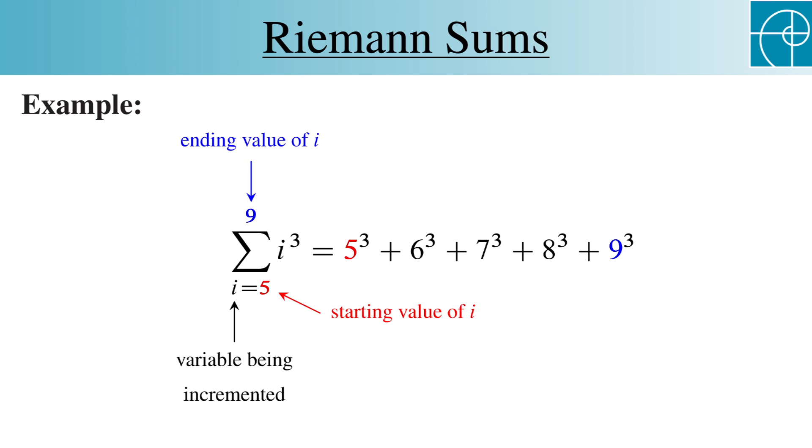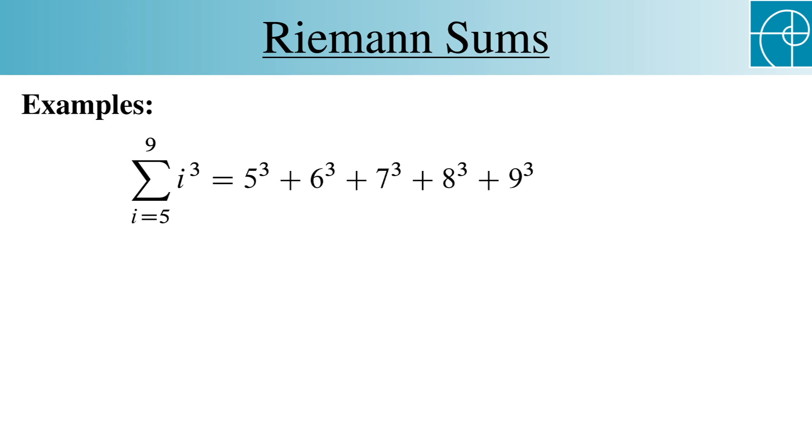We count up by integers starting with 5 and ending with 9, put those numbers into the expression i cubed, and then add up the resulting terms. We can use any letter that we want, but keep in mind that only the letter written below the sigma is incremented.